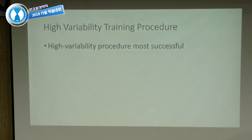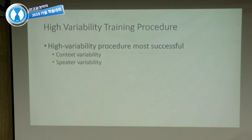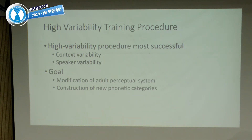Then we came up with a new approach known as the High Variability Training Procedure, associated with researchers like David Pisoni at Indiana, Ann Bradlow, and other colleagues. The High Variability Procedure seems to be the most successful for training non-native categories. When we talk about high variability, we mean variability in phonetic context and variability in terms of speakers. During training, you expose trainees to quite a bit of variability, so that the new categories will be robust. The goal is to modify the adult perceptual system and construct new phonetic categories.